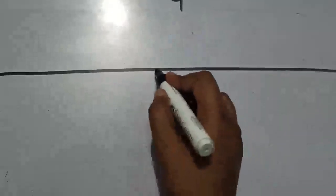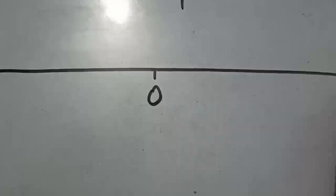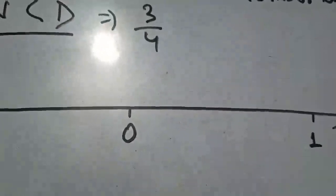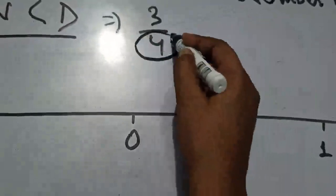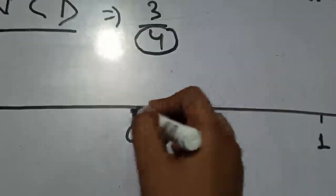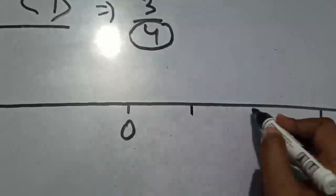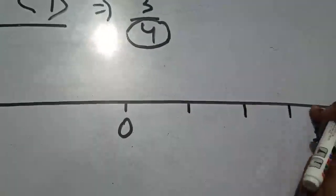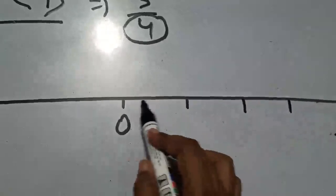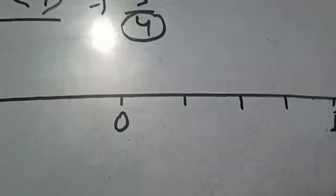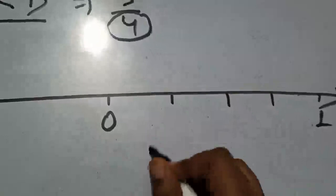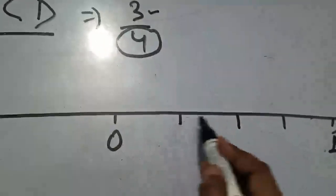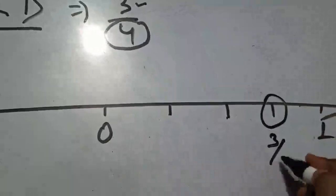This is our number line. Here is zero, and here is one. Because I know the numerator is small, the value is going to be between zero and one. We will divide this portion in equal parts — the denominator is 4, so we divide into 4 equal parts: first, second, third, fourth. From zero to one, divided into four parts.